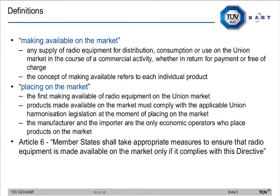There are a couple of definitions. 'Placing on the market' was already in the R&TTE directive — the general principle of first making a product available on the EU market. However, there's now an additional definition: 'making available on the market', relating to any supply of radio equipment for distribution in the course of a commercial activity. This gives market surveillance authorities power to control what distributors are supplying to the market.